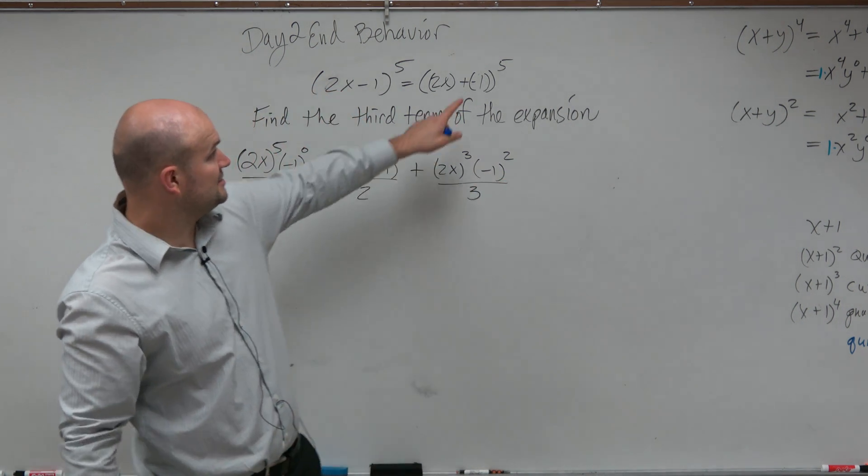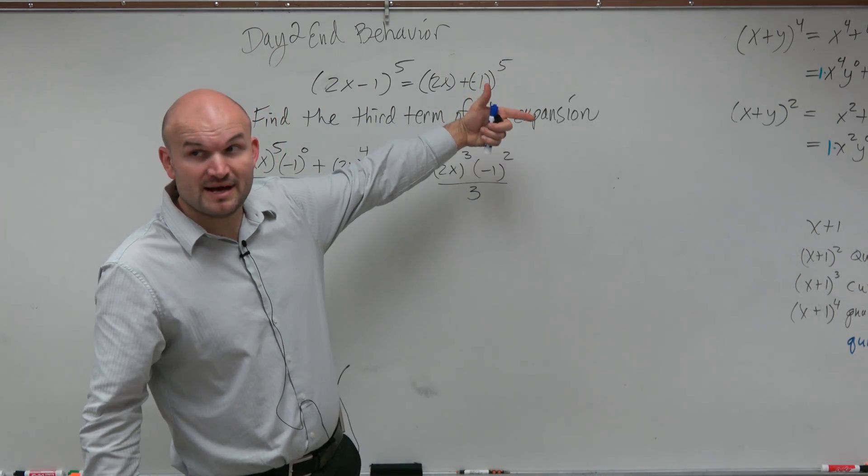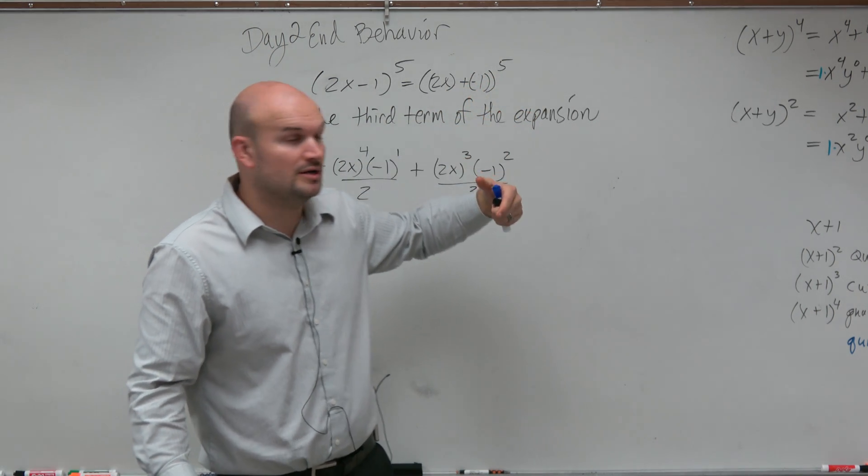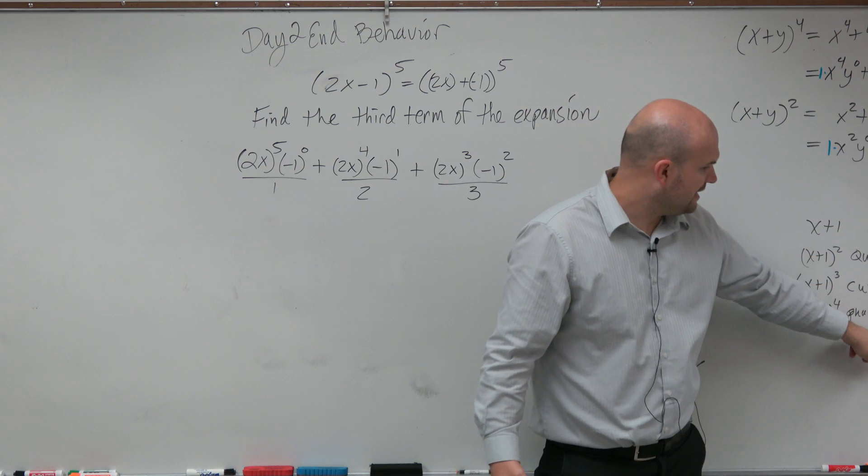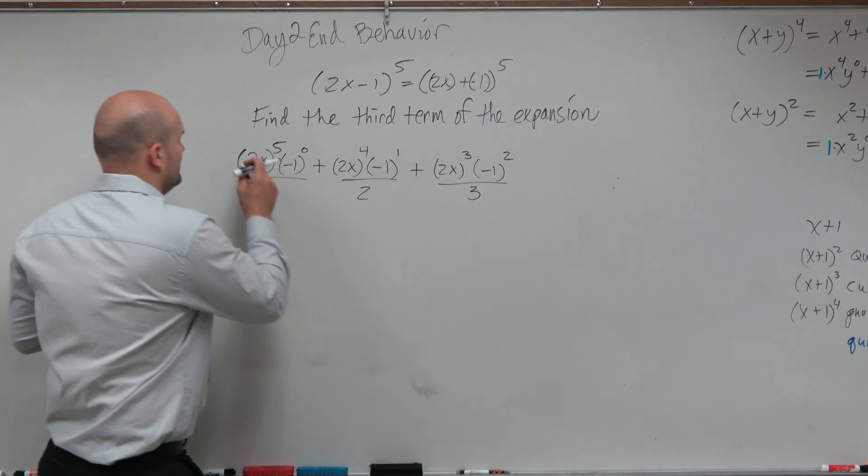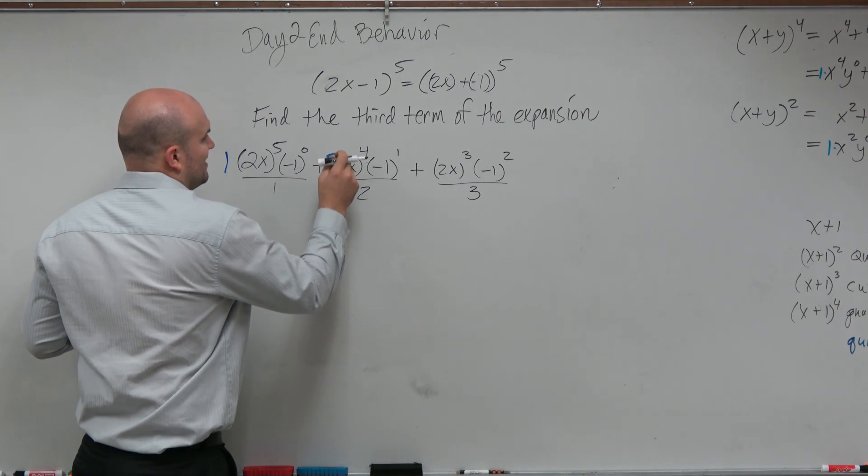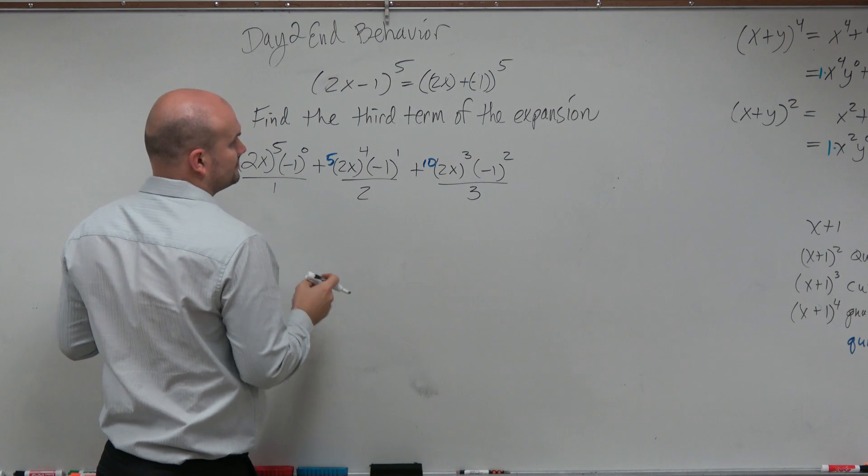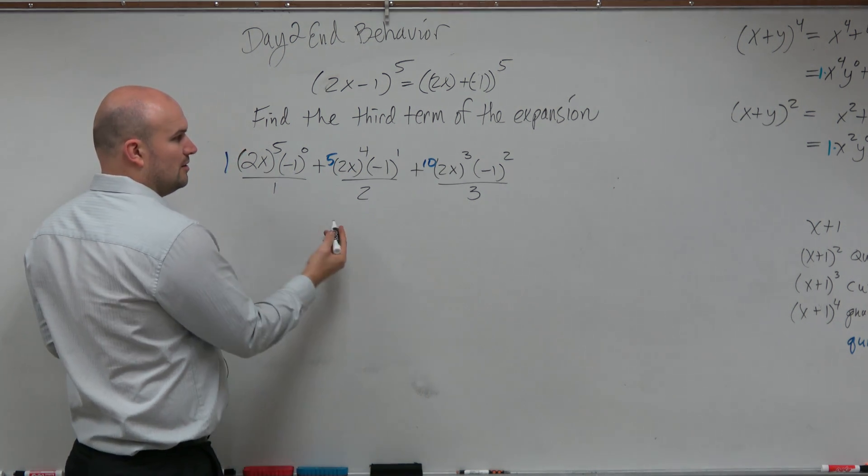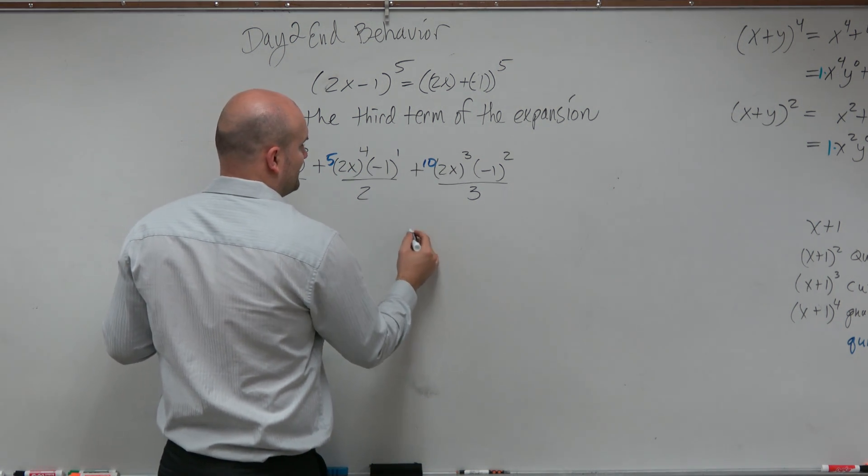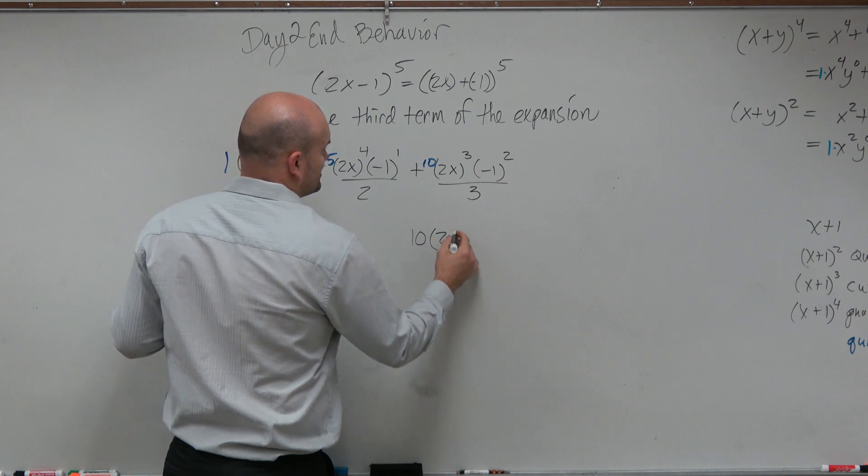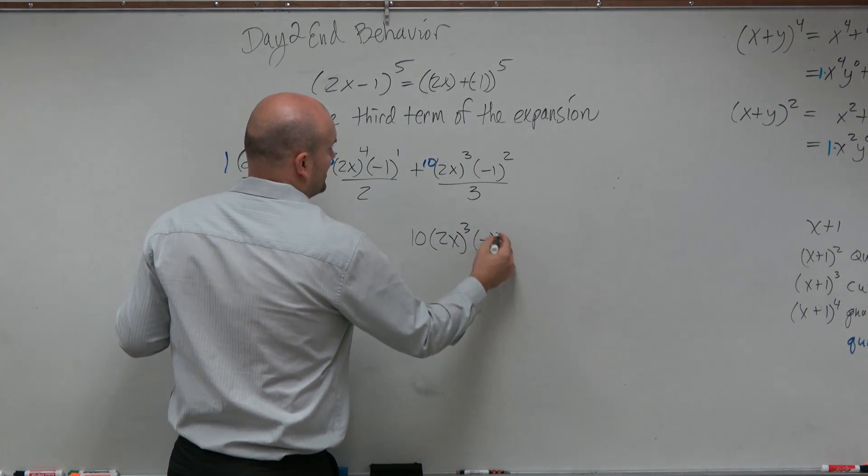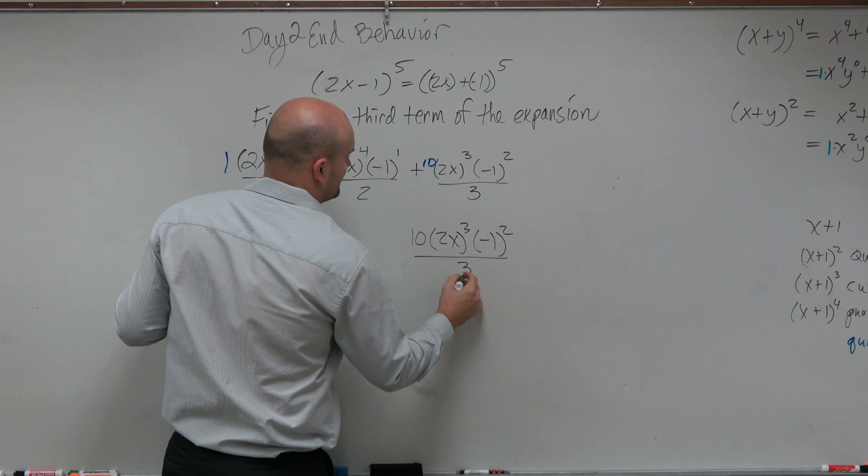Right? Now again, this is to the 5th power, so we need to go back to Pascal's Triangle and make sure to see what we're multiplying by. And you can see that this is going to be 1 times 5 times 10. Right? So if we're looking at this, basically what we have is 10 times 2x cubed times negative 1 squared all over 3.